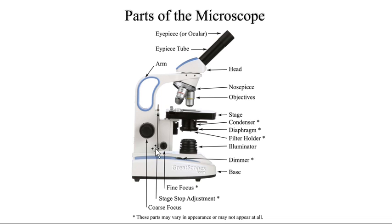This is the arm having coarse adjustment and fine adjustment. This is the stage which has clips to fix a slide. This is the substage which has two parts: condenser and diaphragm, which are adjusted to control the illumination.